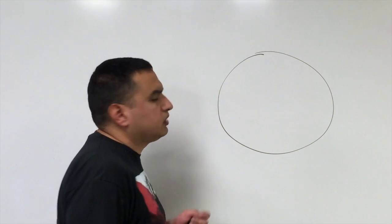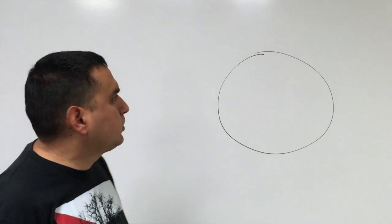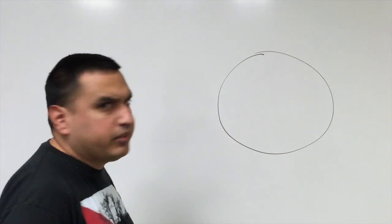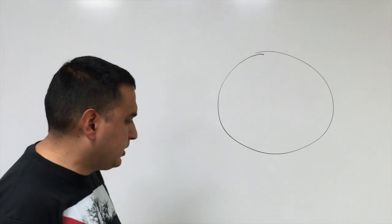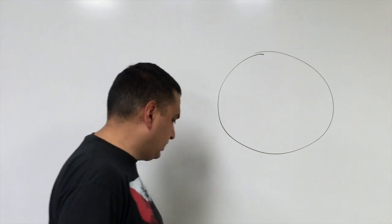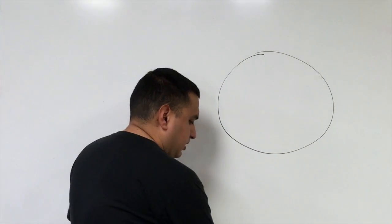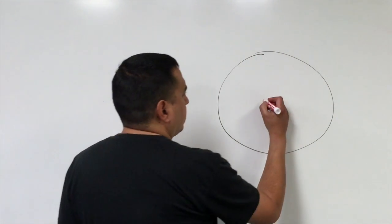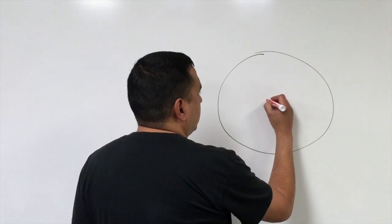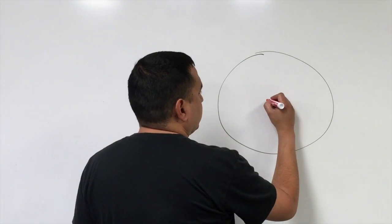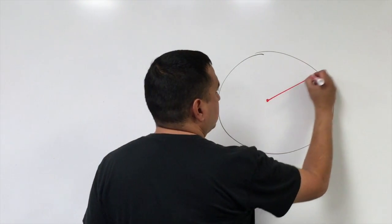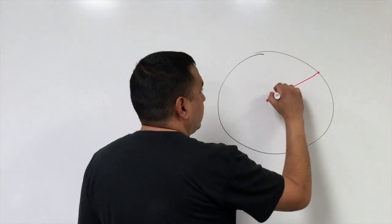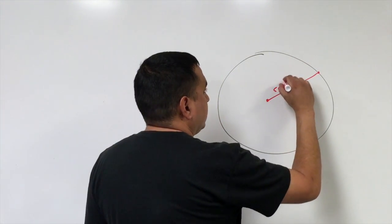We're going to start by describing some different parts of a circle. Some of them you'll be familiar with, some of them you might not have heard of before. We'll start with an easy one — the radius, which goes from the center of a circle to an edge of the circle.